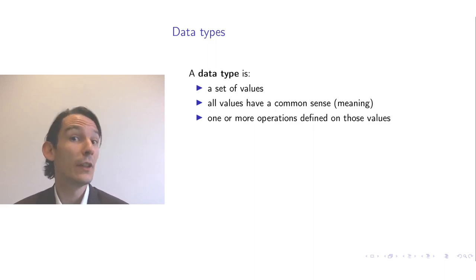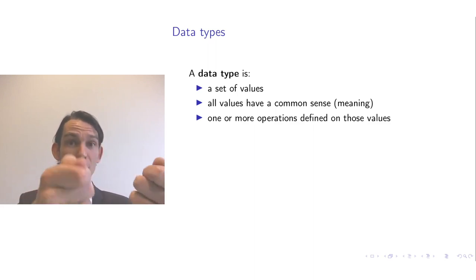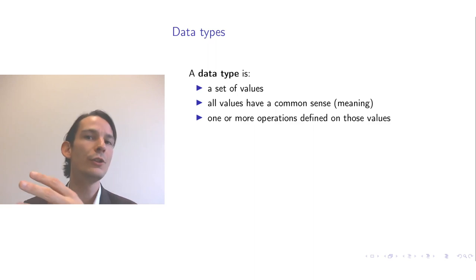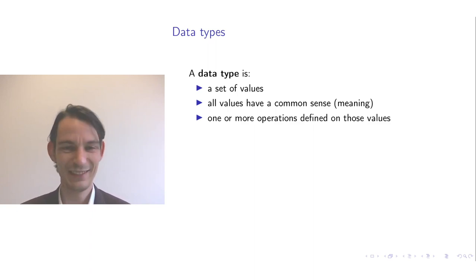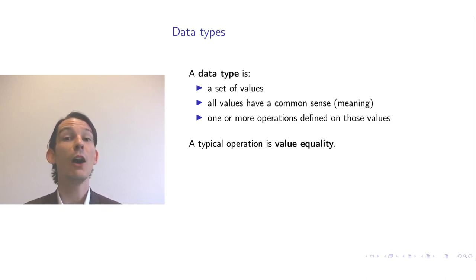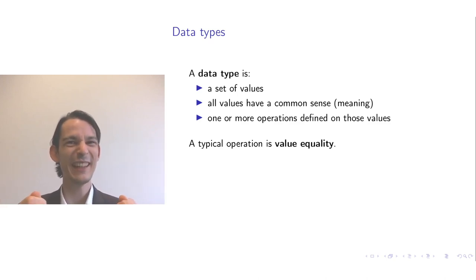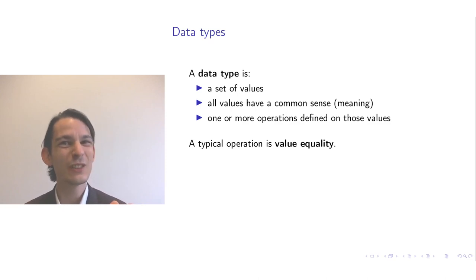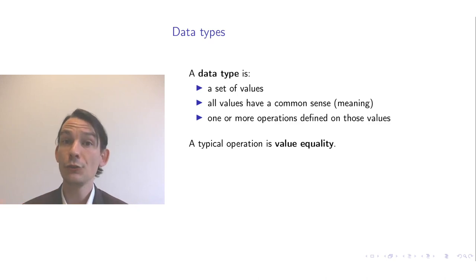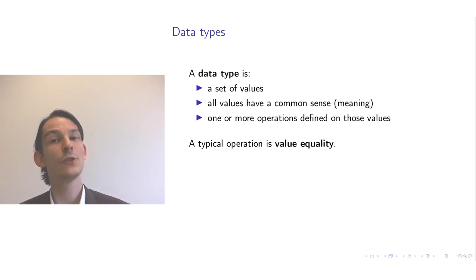Those operations you can think of as functions. The arity of an operation is how many values of the data type you take, and the operation then produces a new value. A typical example would be addition on numbers. A typical operation shared by all data types is value equality — it takes two values of the same data type and checks whether they are the same. Monday is not Tuesday, and one is not zero. So this notion of value equality is common to every data type.